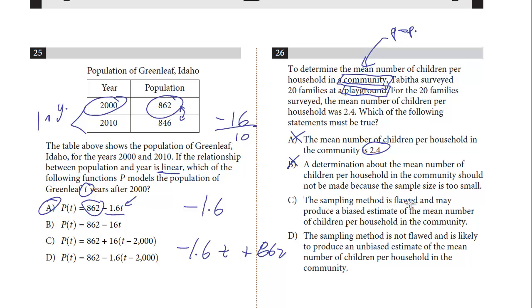The sampling method is flawed and may produce a biased estimate of the mean number of children per household in the community. Yes, it is flawed because they're asking at this specific venue, which definitely could be biased if they're only asking families at playgrounds where kids are likely to be. Let's just take a look at D. The sampling method is not flawed and is likely to produce an unbiased estimate of the mean number of children per household in the community. This is the opposite of C, and definitely it is biased. The answer here is C.